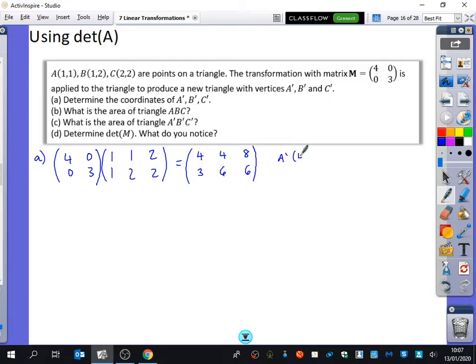So A dash is 4, 3. B dash is 4, 6. And C dash is 8, 6. So the area of triangle ABC, well, if we do a little sketch of it, we've got A is 1, 1, B is 1, 2, and C is 2, 2. So the lengths of the sides of the triangle are 1 and 1. So what's the area of the triangle? A half, yeah, that's just A, B, and C. That's 1, 2, 1, 2. So the area is a half.